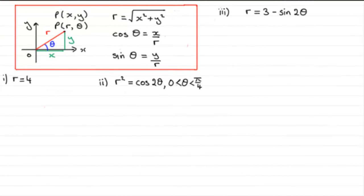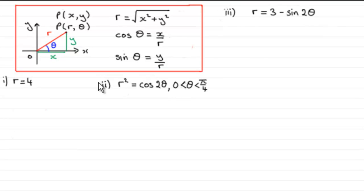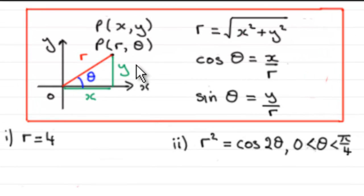Welcome to this tutorial where I'm going to show you how we can convert a polar equation of a curve — I've got three examples — into Cartesian equations of curves. To do this we should be familiar with the connection between Cartesian coordinates x, y and polar coordinates r, theta. If we've got a point P then: